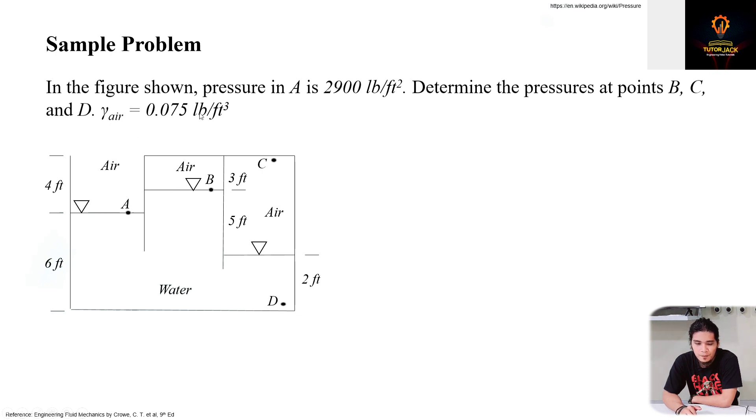And then we're asked to find the pressures at points B, C, and D. Given the unit weight of air equals 0.075 pounds per cubic foot. So dimensions are given, we have 6 feet and then 4 feet, 3 feet, 5 feet, and 2 feet.